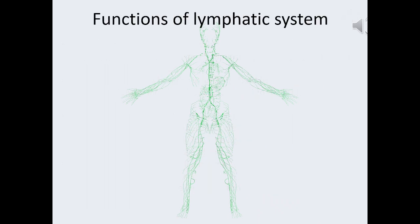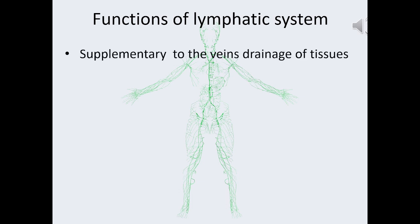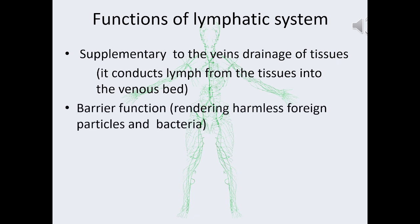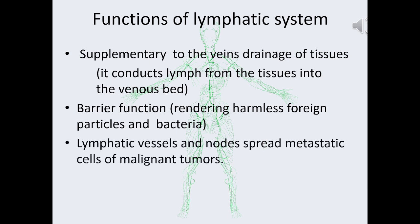Functions of the lymphatic system. The first function is supplementary to the veins — drainage of the tissues. It conducts lymph from the tissues into the venous bed. The second is barrier function, rendering harmless foreign particles and bacteria. The third is a negative function: lymphatic vessels and nodes spread metastatic cells of malignant tumors.